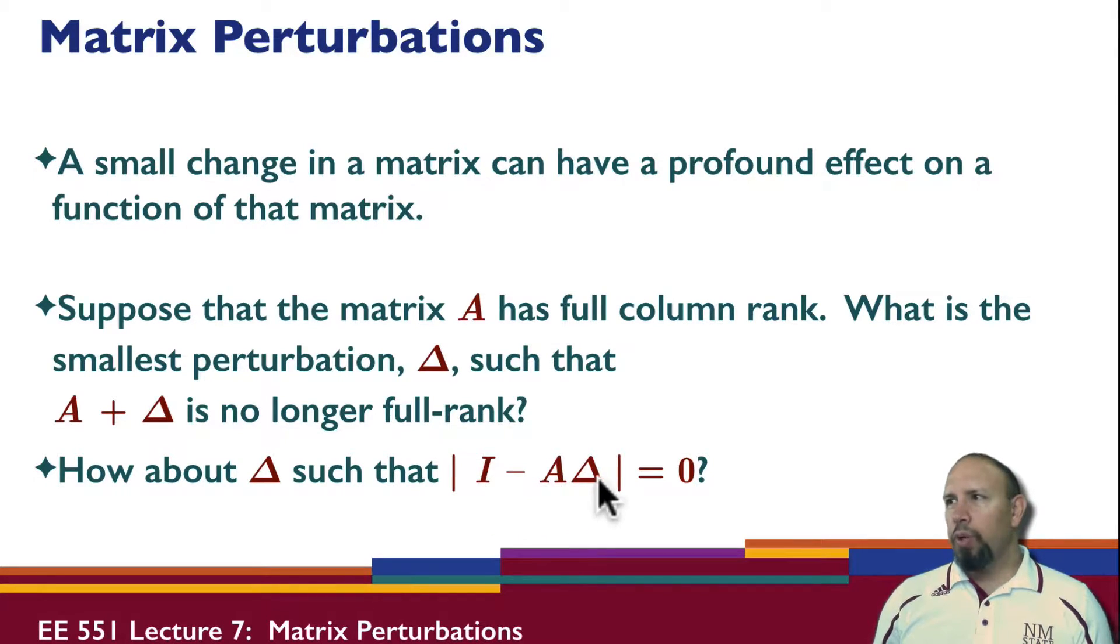So what is this saying? Well, we know that if delta is zero, the determinant, then we're just taking the determinant of I, right? So if delta is not zero, how large can delta be before this determinant becomes zero? So that's the question that's going on here.